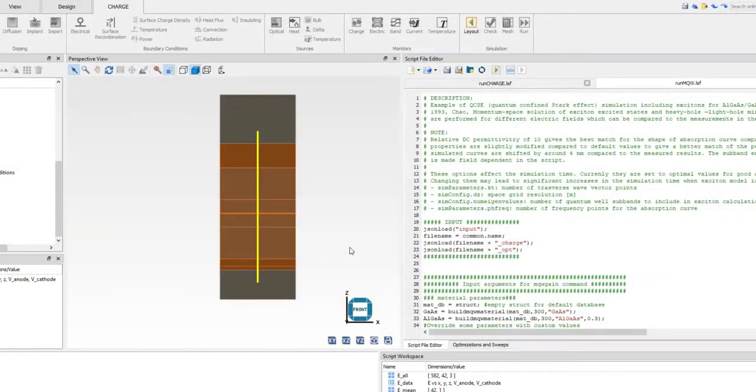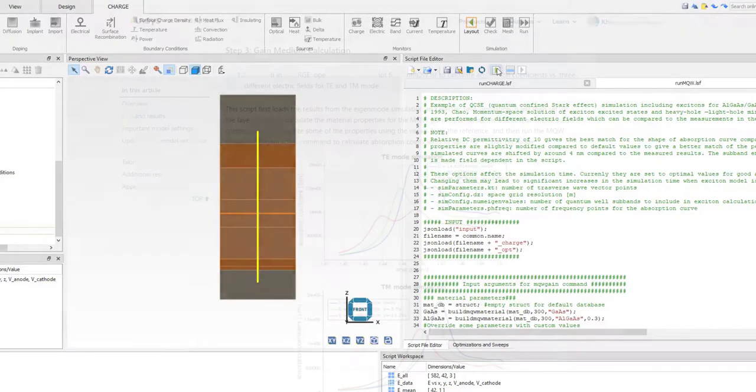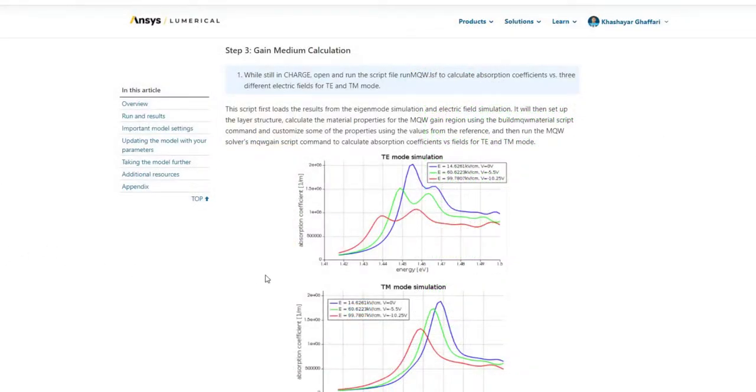And finally, MQW is used to simulate the gain medium, so we can get the absorption coefficient and transmission of the modulator.